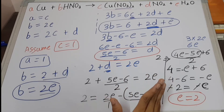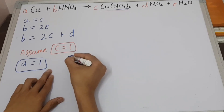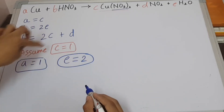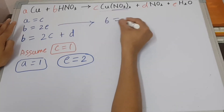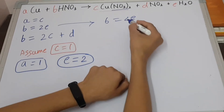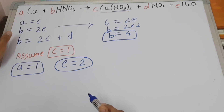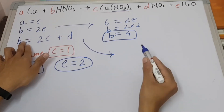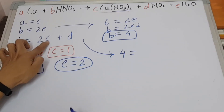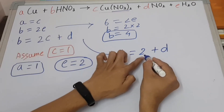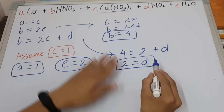Now we have the values of A, C, and E. From B equals 2E, B equals 2 times 2 equals 4. And from B equals 2 plus D, we get 4 equals 2 plus D, so D equals 2. Finally we got the values of B and D as well.